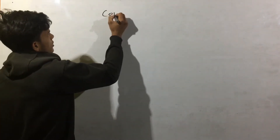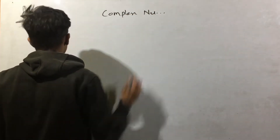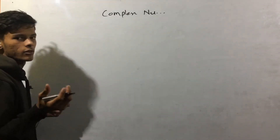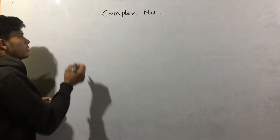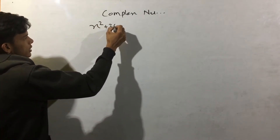Hello! We are going to take a complex number layer of engineering mathematics. We are going to cover the basics of complex numbers numerically. We are going to take an example: x squared plus 36 is equal to 0.